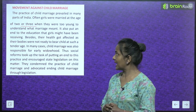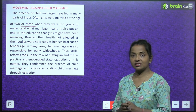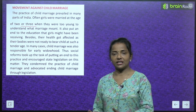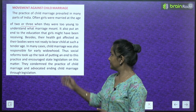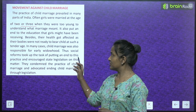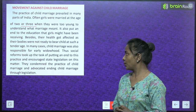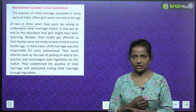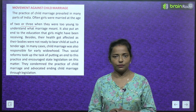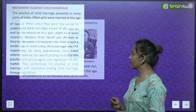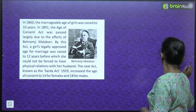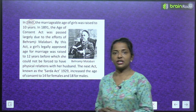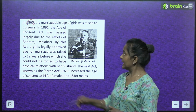Social reformers took up the task of putting an end to this practice and encouraged state legislation on this matter. They condemned child marriage and advocated ending it through legislation. In 1860, the marriageable age of girls was raised to 10 years.